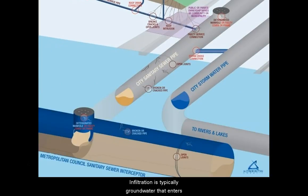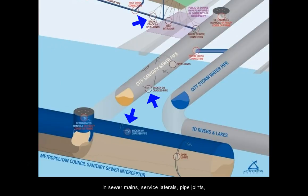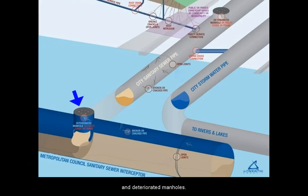Infiltration is typically groundwater that enters the wastewater system through cracks and openings in sewer mains, service laterals, pipe joints, and deteriorated manholes.